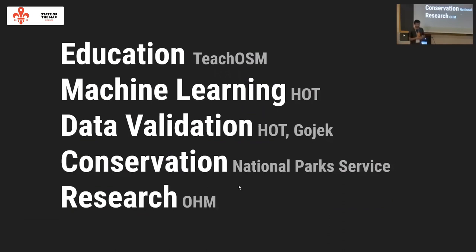In education, TeachOSM uses OSM software outside of OSM to teach people how to map and teach concepts of geospatial data management. With the rise of machine learning and geospatial training data set generation, groups like HOT use OpenStreetMap software to draw things with tools like JavaScript and iD and export that into training pipelines. A lot of groups use OSM software for validation — they want to do it in a sandbox, test things out, and then throw it away. National Park Service was one of the first iD forks that was really popular.